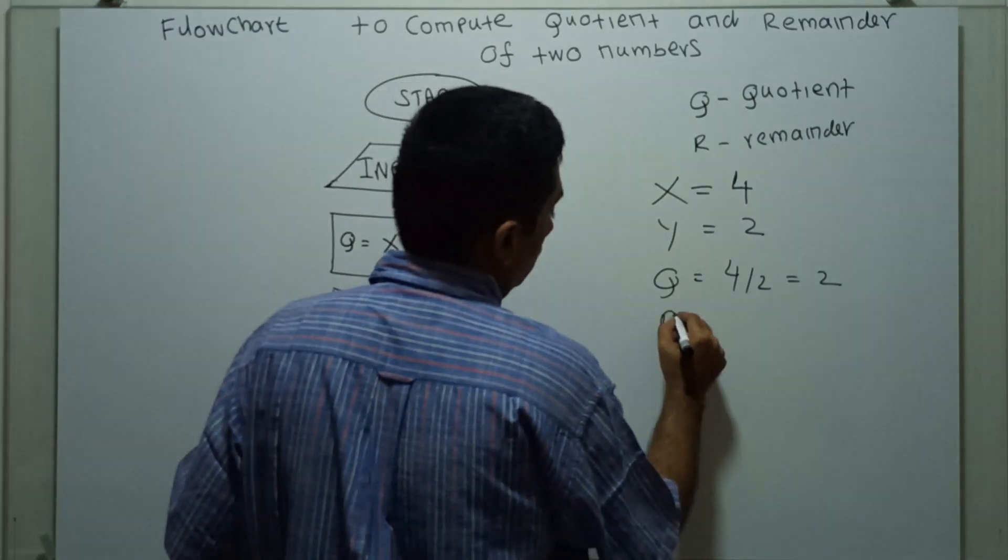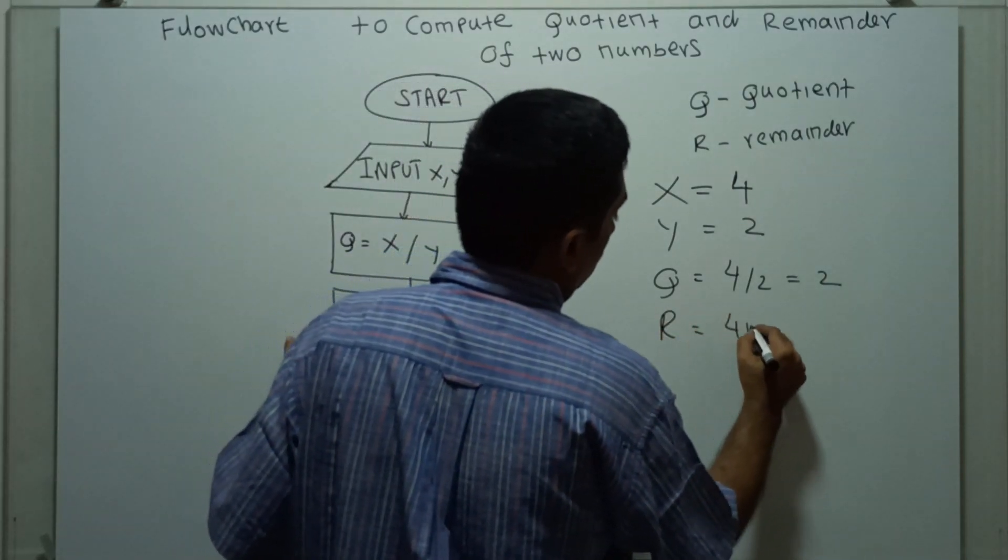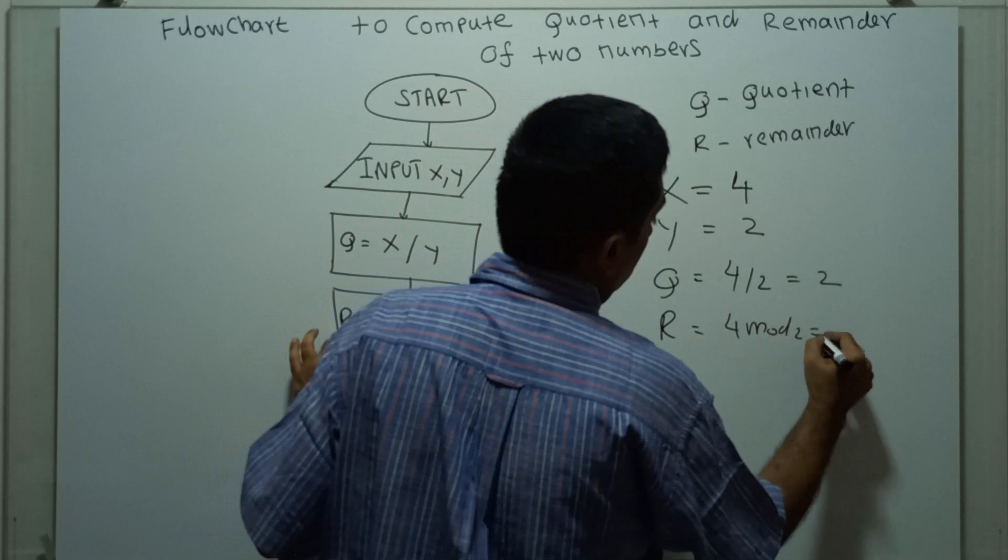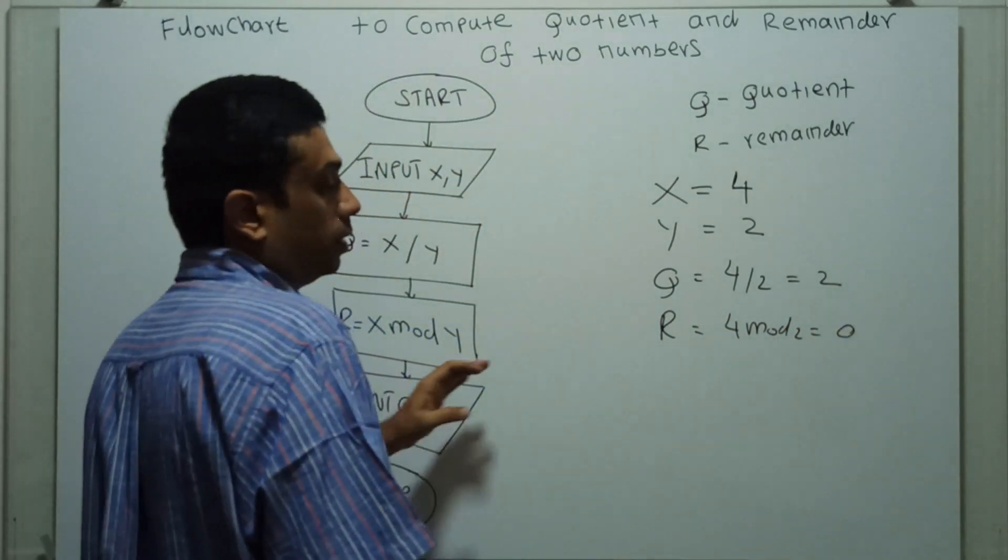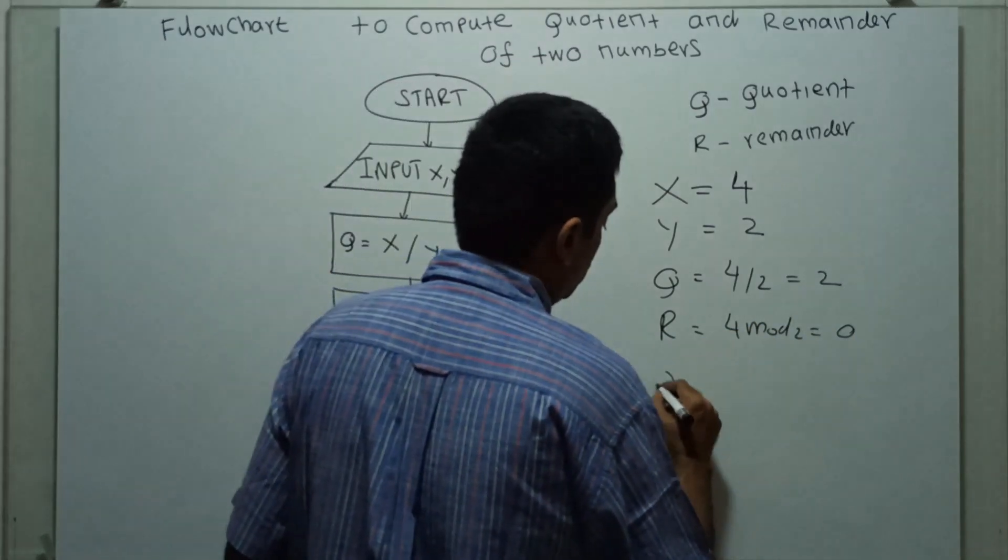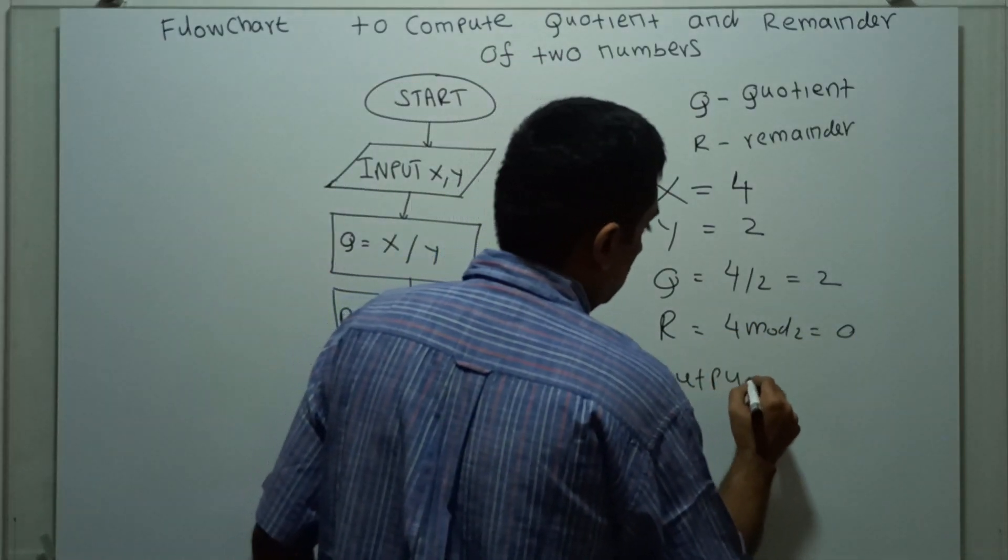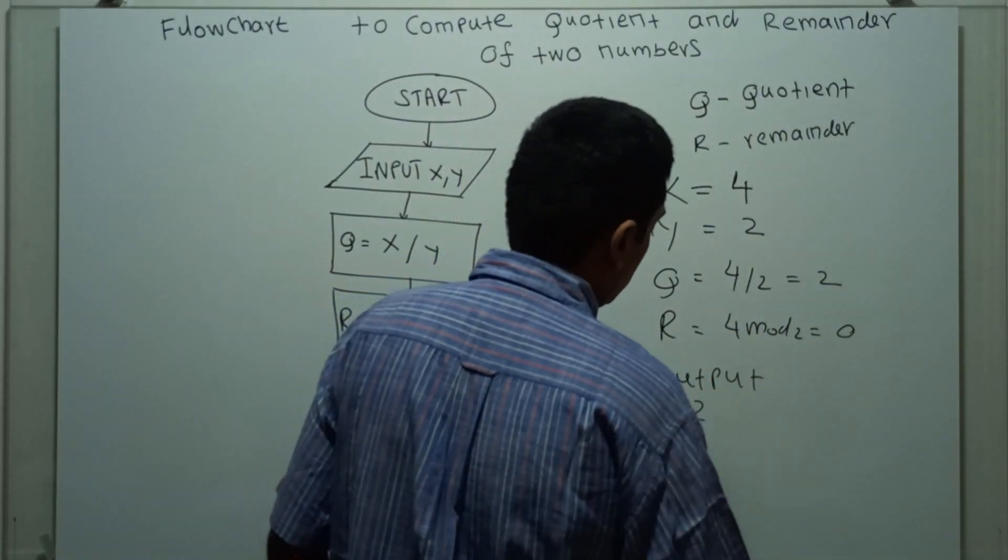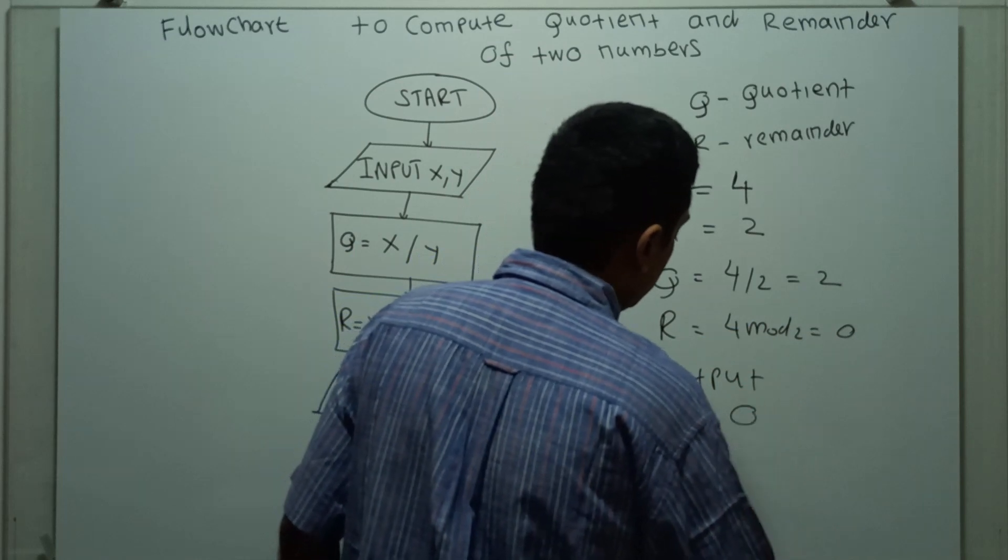Remainder equal to 4 mod 2 is equal to 0. When you divide 4 by 2, the remainder is 0. So, I am printing my output. First one is quotient, second one is remainder. That's it.